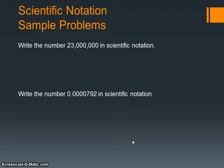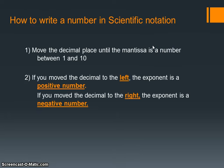You've probably seen problems like this before, where you're being asked to write a huge number like 23 million in scientific notation, or a really small number. Let's talk about the rules here. You're going to move the decimal place until the mantissa is a number between 1 and 10. If you moved the decimal to the left, the exponent is a positive number. If you moved the decimal to the right, the exponent is a negative number.